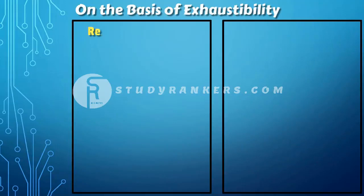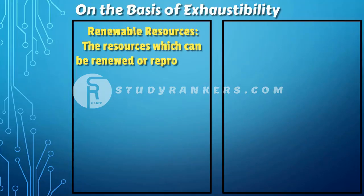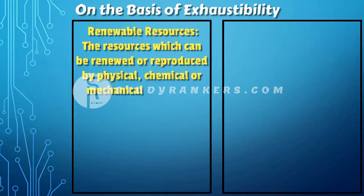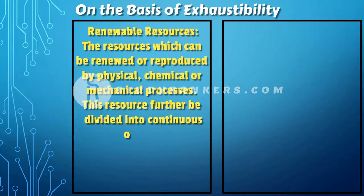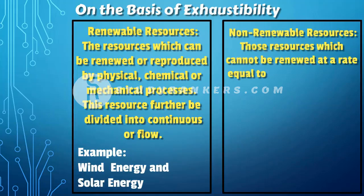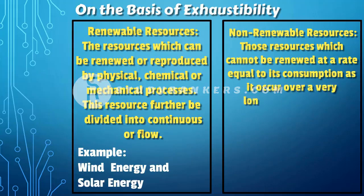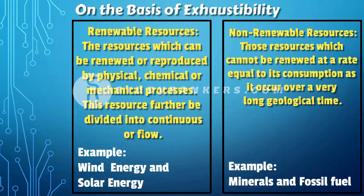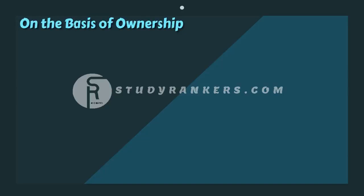On the basis of exhaustibility, resources can be classified as renewable and non-renewable. Renewable resources are those which can be renewed or reproduced by physical, chemical or mechanical processes, for example solar and wind energy, water, forest and wildlife. Non-renewable resources are those which once consumed cannot be replaced; they take millions of years in their formation, for example oil and coal.